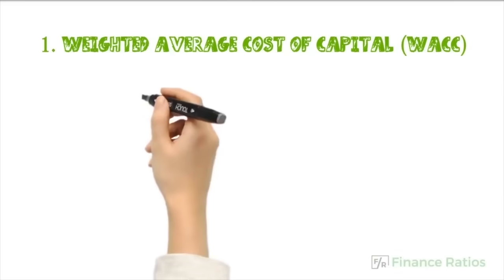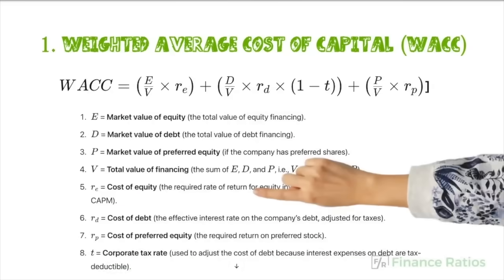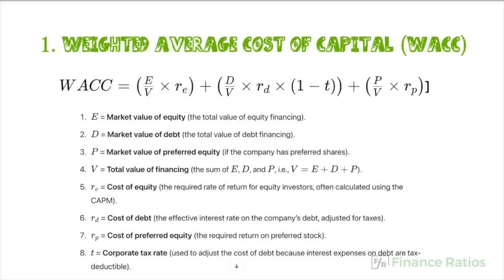First up is the weighted average cost of capital, or WACC. This formula helps you determine the average rate of return a company must earn on its investments to satisfy its investors and creditors. Where E is market value of equity, D is market value of debt, and P is market value of preferred equity if the company has preferred shares.